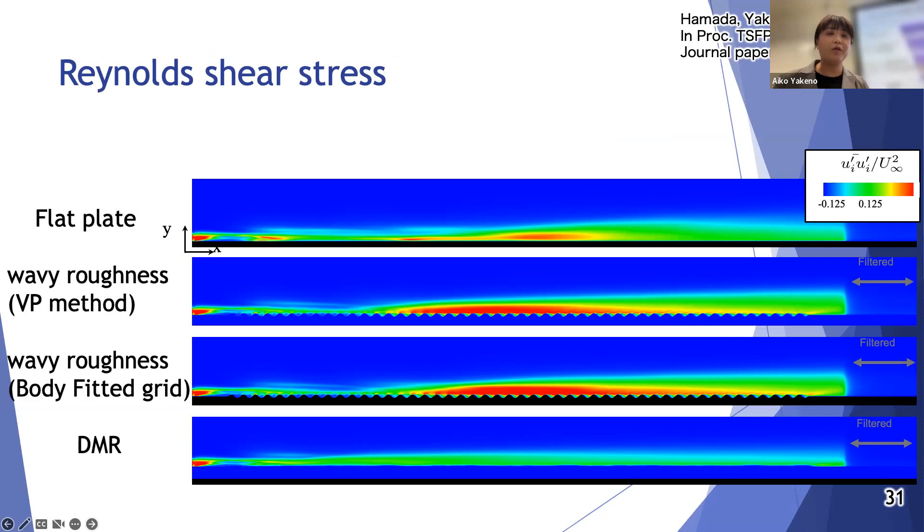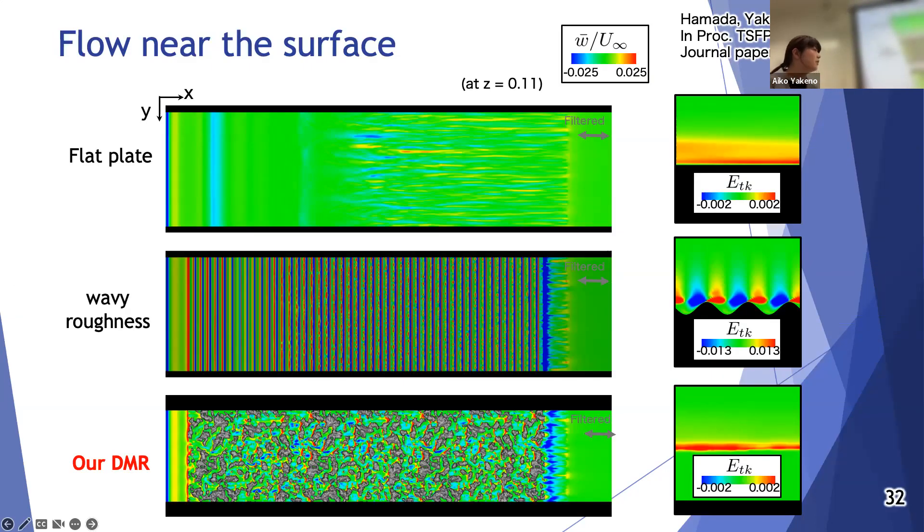We also have seen some things. Maybe we can explain the mechanism by using some energy budgeting. Also we found some dissipation is encouraged around the roughness. Yeah, we are thinking now. I got some response this morning from the paper. So please check the following paper. Yes, that's all. Thank you.